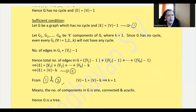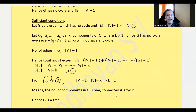We know |V1| + |V2| + ... + |Vk| = |V|, so |E| = |V| minus k — call this equation 2. From equations 1 and 2, we get k = 1, meaning G has only one component, so it is connected and acyclic. Hence G is a tree.